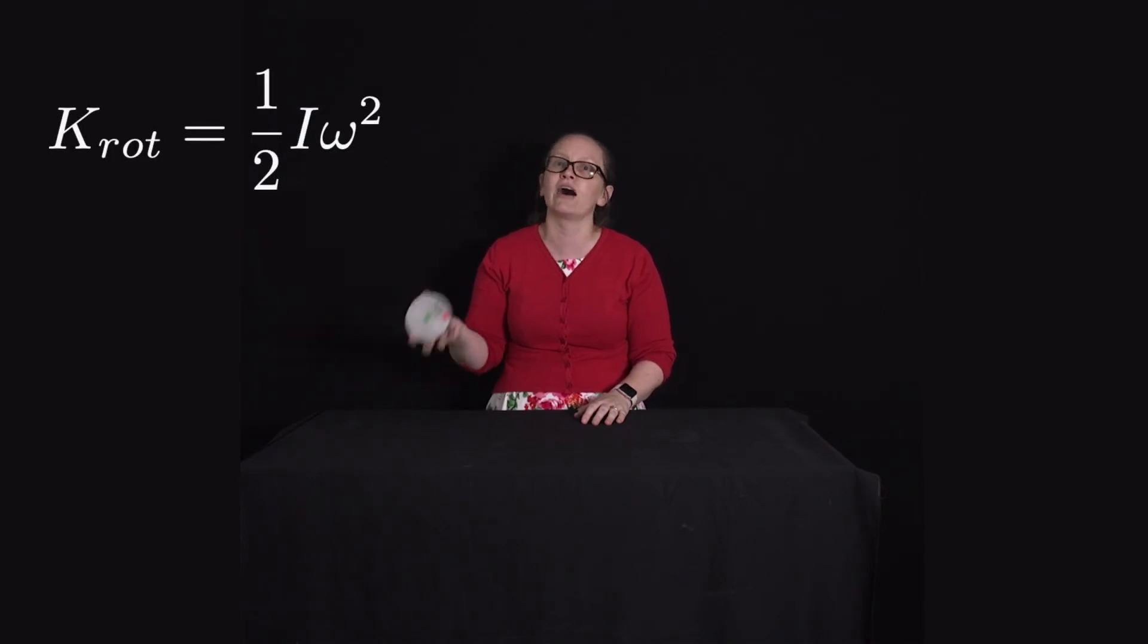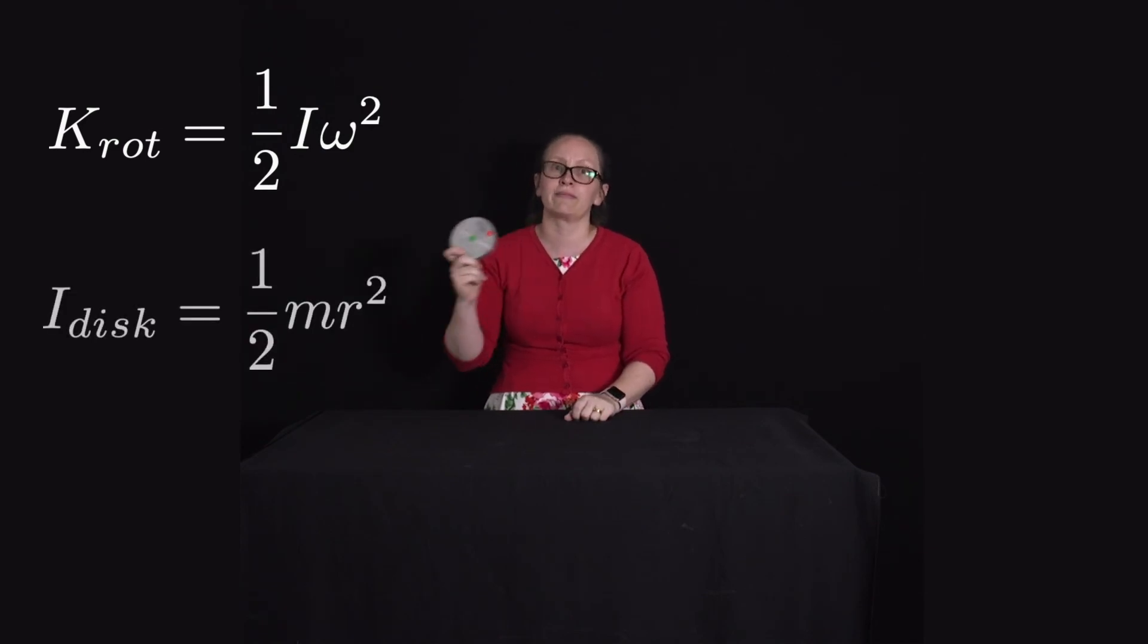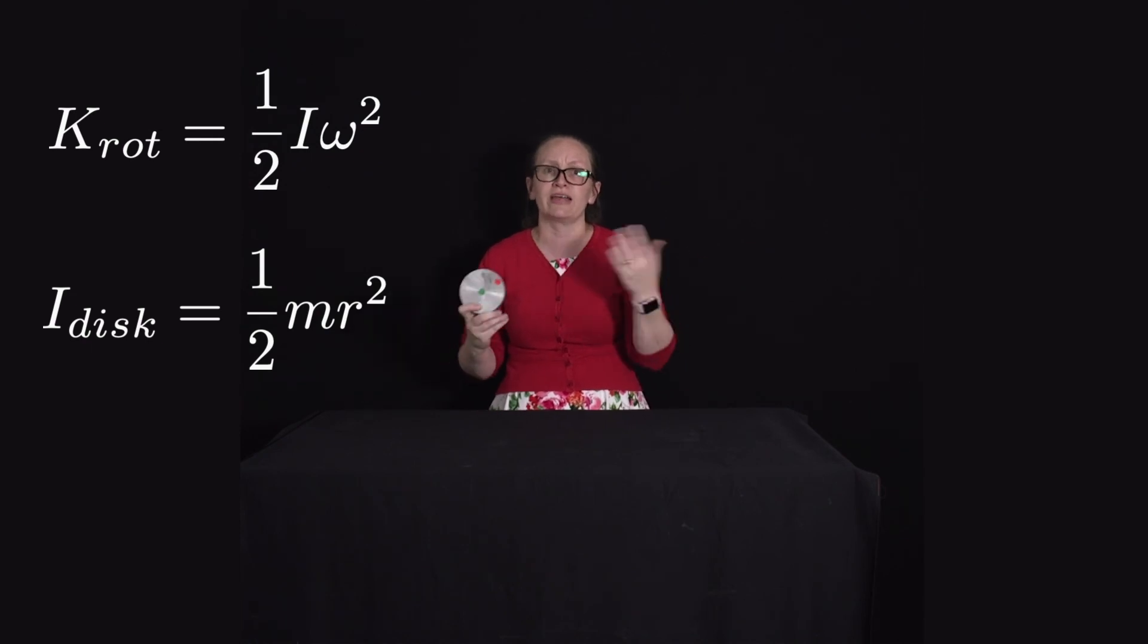The kinetic energy of the rotational motion is given by 1/2 Iω². For a disc like this one, the I is given by 1/2 mr². But this holds for any shaped object, which could have a different moment of inertia.